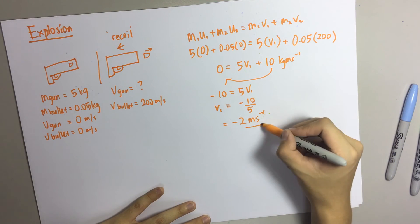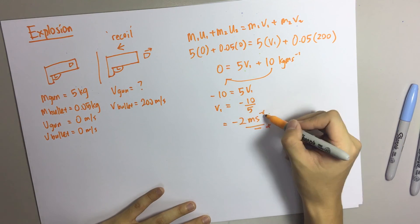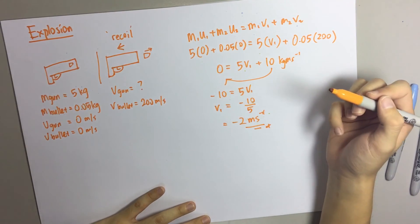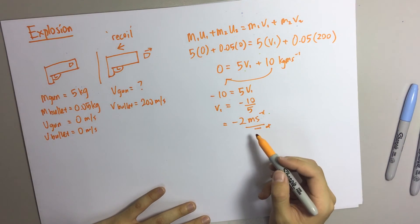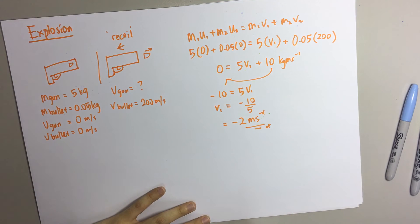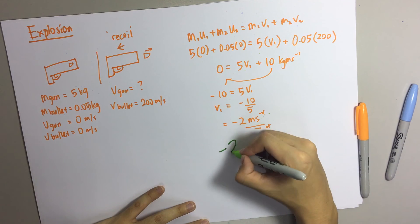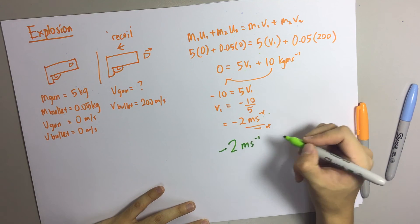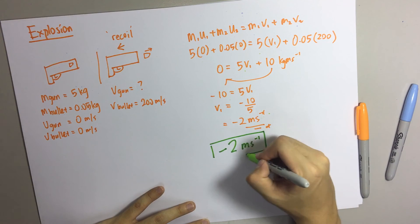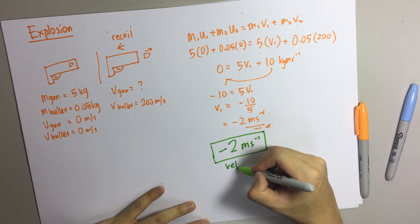So this will be the speed of the gun when you recoil. But in your final answer, do you write the negative 2 or you just write 2 meters per second? The answer is negative 2 meters per second. Why?